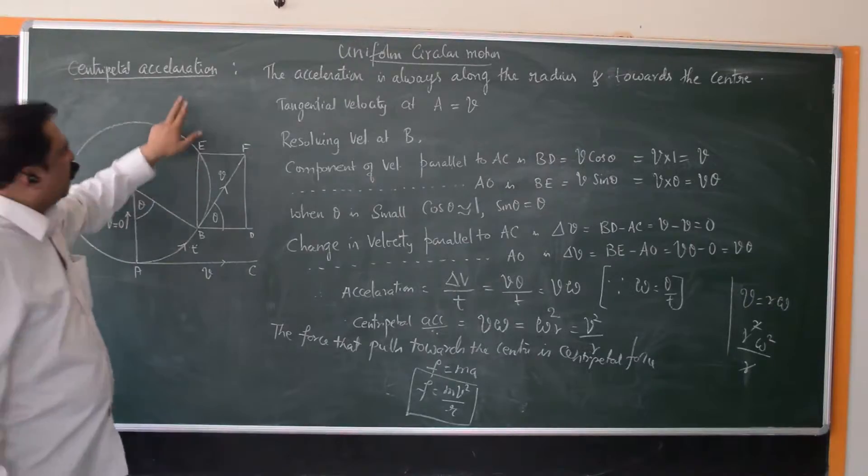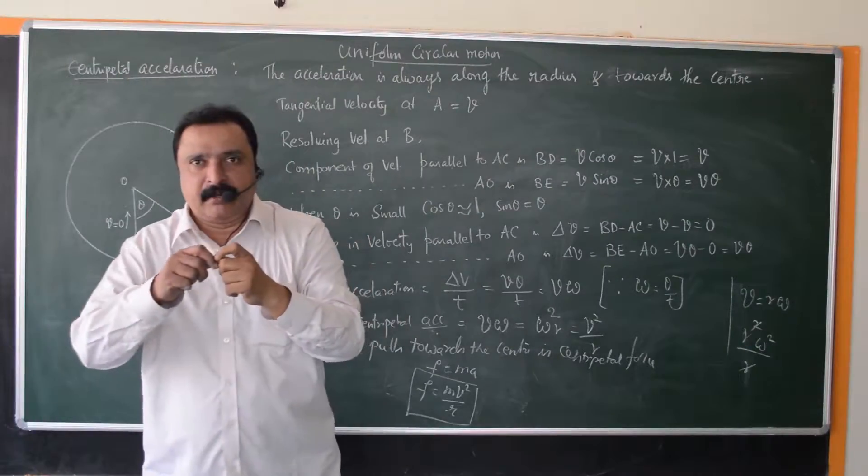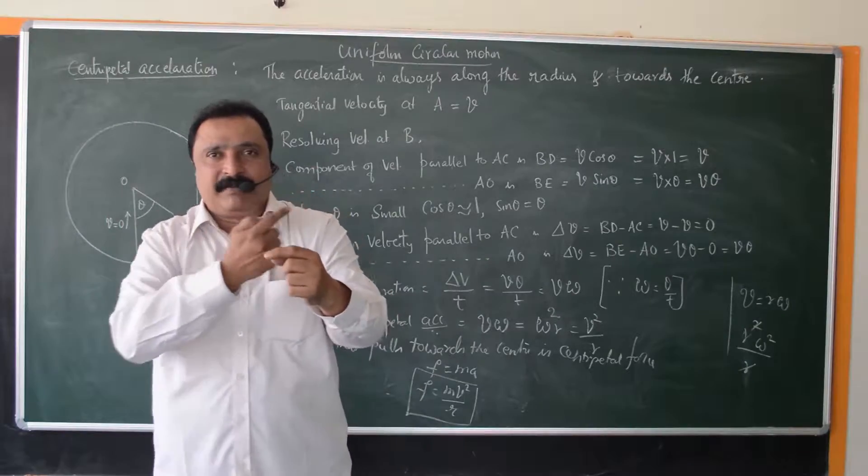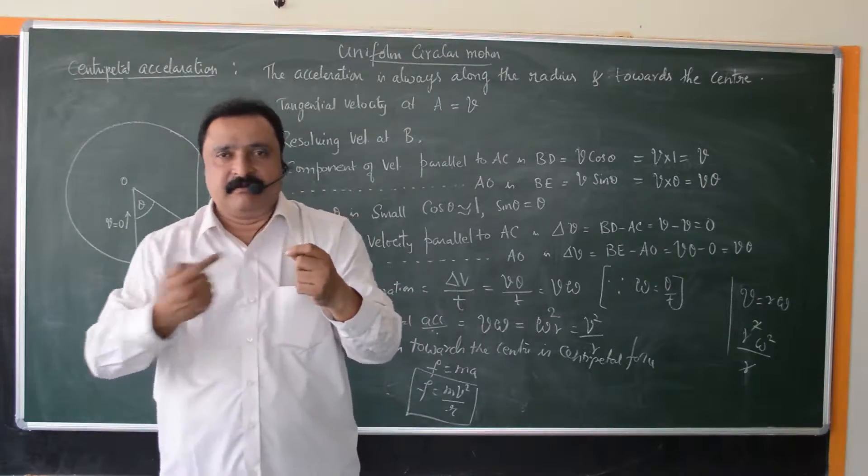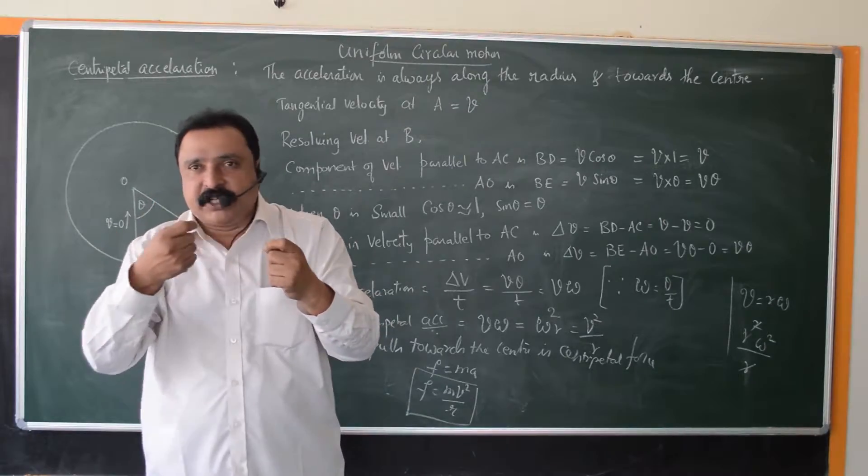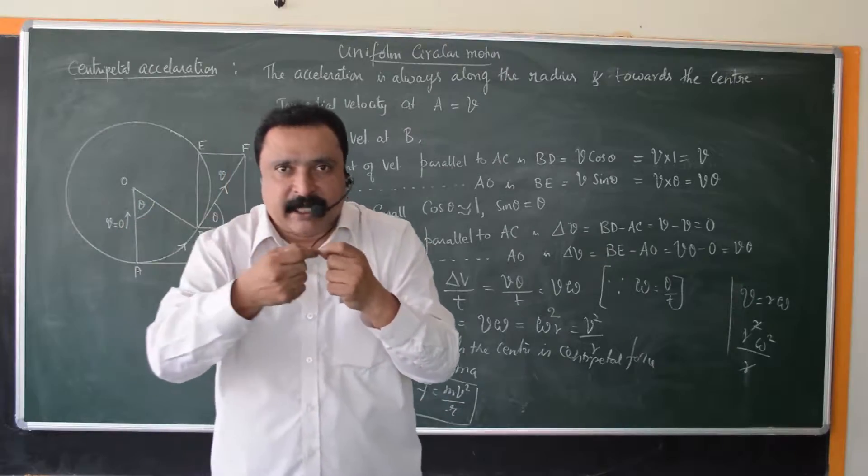What is meant by centripetal acceleration? When you take a stone and tie it with a string and start whirling, the stone keeps changing its direction continuously. So it is constantly accelerated because it is changing its direction, and this acceleration is acting along the radius of the circle. It is radial and towards the center.